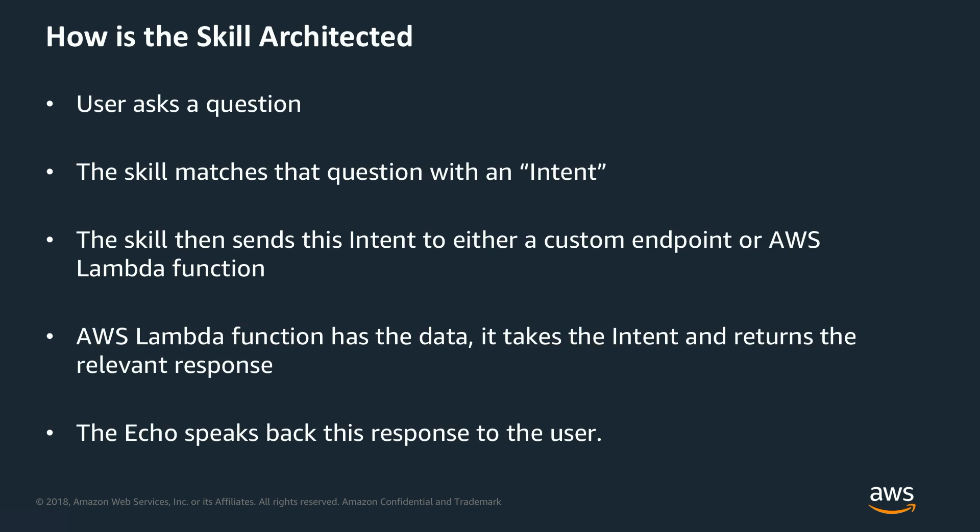First, this is how the skill is architected. The user asks a question, and the skill matches that question with an intent. The skill then sends the intent to either a custom endpoint, HTTP endpoint, or to an AWS Lambda function. I'm going to be using AWS Lambda here. The Lambda function takes the intent and returns the relevant response. The last step is the Echo speaks back the response to the user.